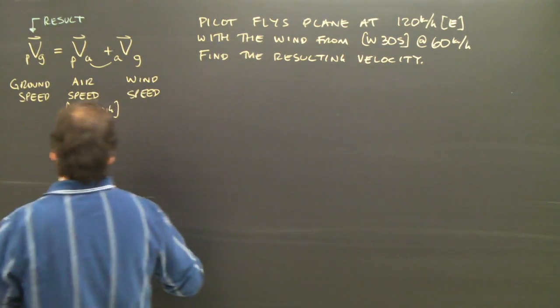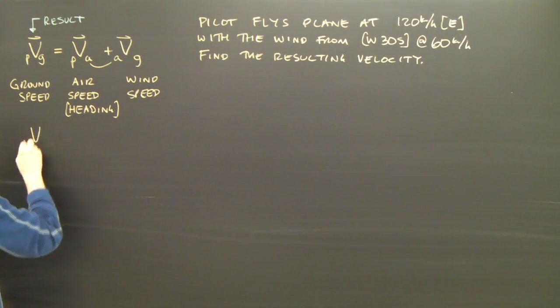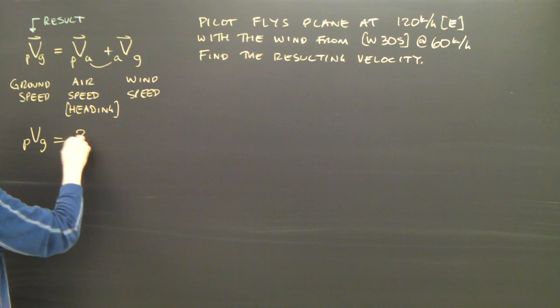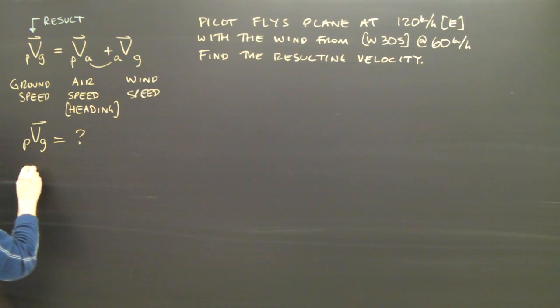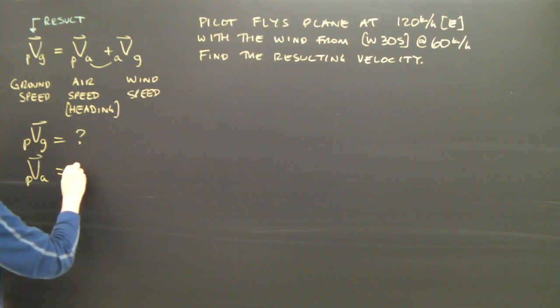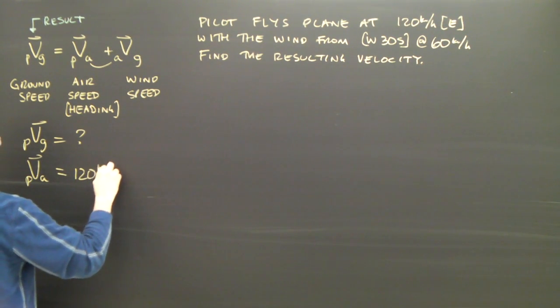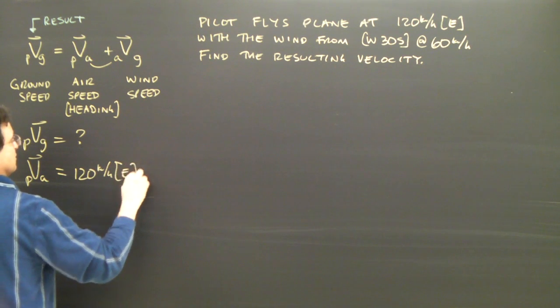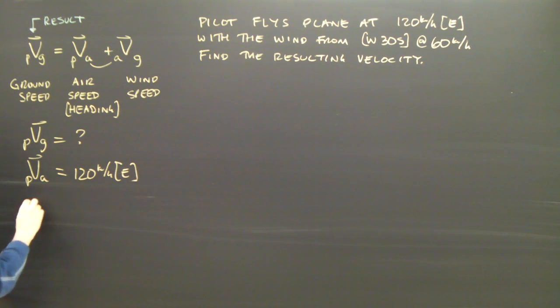Let's put down what we have here. The plane relative to the ground. That's what we're looking for. The plane relative to the air. Well, the plane is traveling at 120 kilometers per hour east, and the wind is blowing it off course.